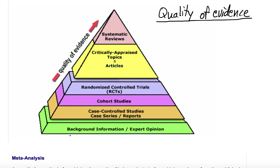I want to talk about quality of evidence as related to different types of studies. This is a pyramid that is often used — you can find it all over the internet — that shows quality of evidence. As the pyramid gets higher, the blocks get smaller, because higher quality evidence has fewer studies. There are much fewer high quality studies than low quality studies. This will be valuable for those looking at studies to determine where we're at in the pandemic, what therapies are helpful, and to gauge whether a conclusion is one we can act on.